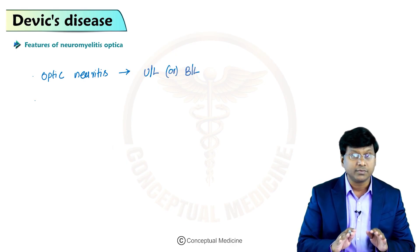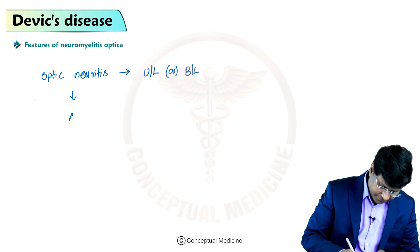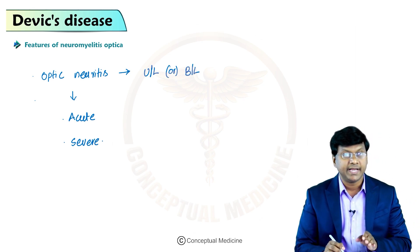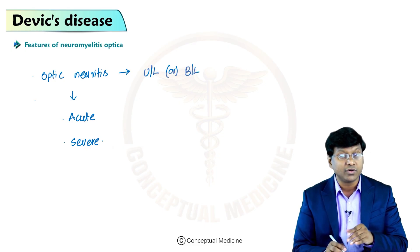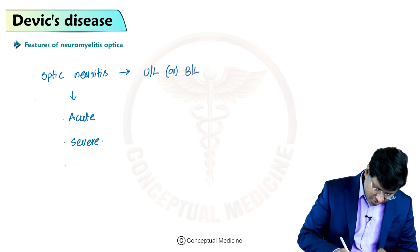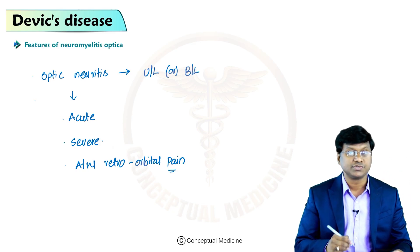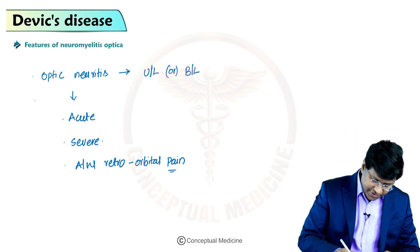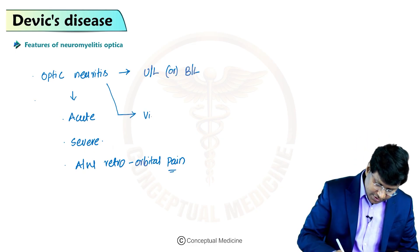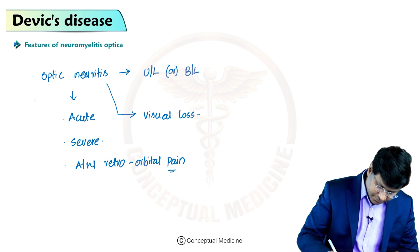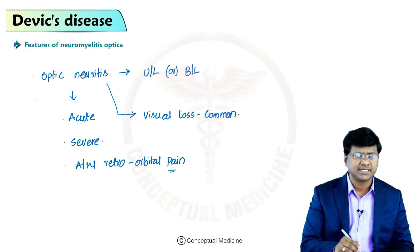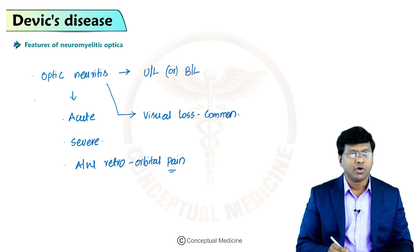The optic neuritis in neuromyelitis optica is almost always acute and very severe, and may or may not be associated with retroorbital pain. Secondary to this optic neuritis, visual loss is common. Optic neuritis is one of the key features of neuromyelitis optica.